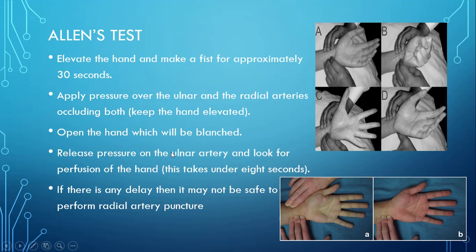Then release pressure on the ulnar artery and look for perfusion of the hand — this takes under 8 seconds. Remove pressure from the ulnar artery while keeping pressure on the radial artery and observe. If the hand becomes red again quickly, it is safe to perform radial artery puncture. If there is a delay, collateral circulation is not adequate.